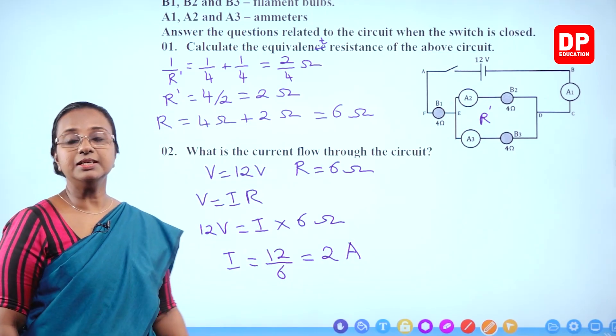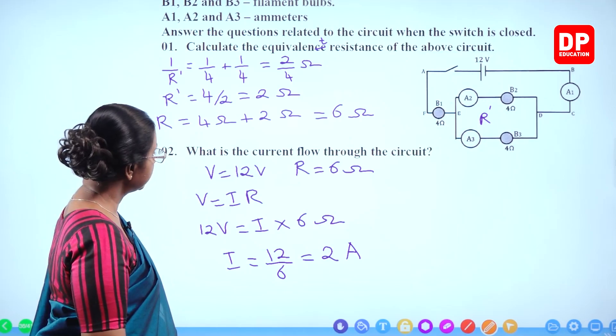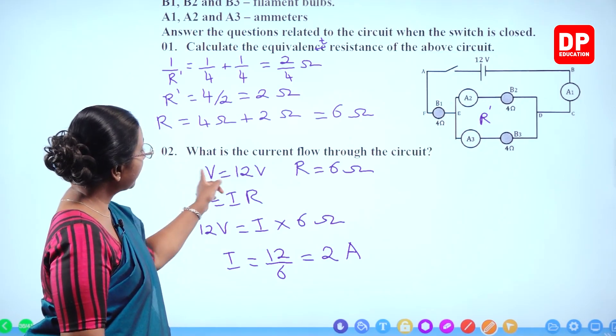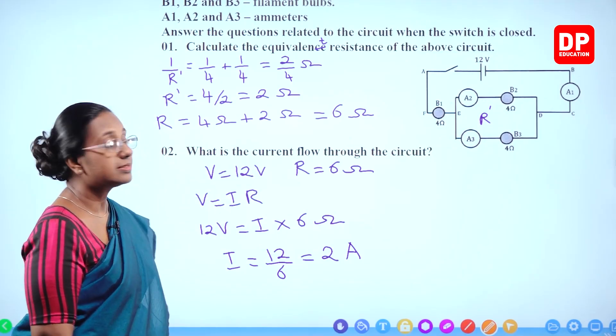Second: what is the current flow through the circuit? Using V = IR: 12 V = I × 6 Ω, so I = 12/6 = 2 amperes. The current flow through the circuit is 2 amperes.